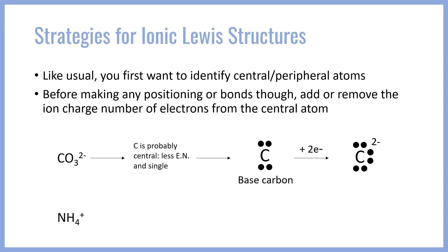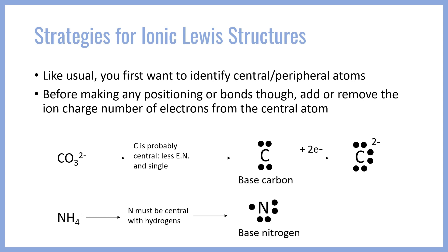We can do the same with the ammonium ion. Before we go any further in drawing the Lewis structure, I want to show you what it looks like when you have a positive charge. So ammonium: N is going to be the central atom because hydrogen is always peripheral. Our base nitrogen has five electrons because N is a group 15 atom. But in this case, we have a positive charge, which means we need to remove one electron from our Lewis structure. So N now has four electrons with a positive charge.